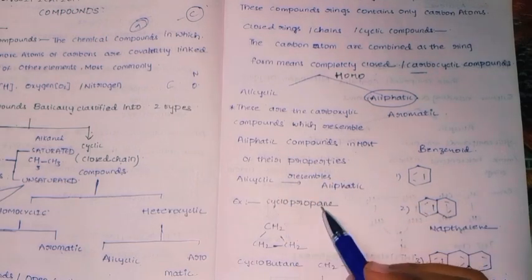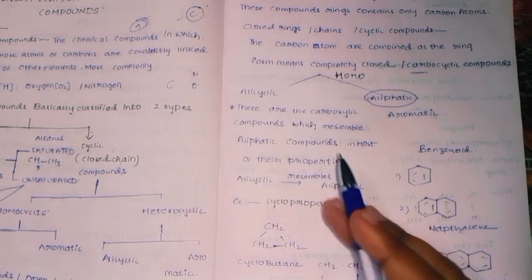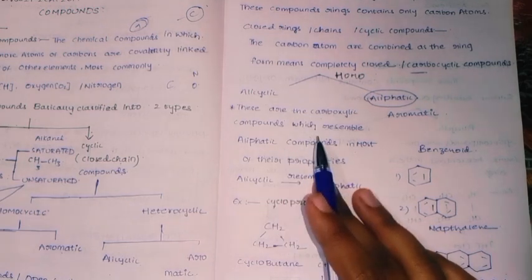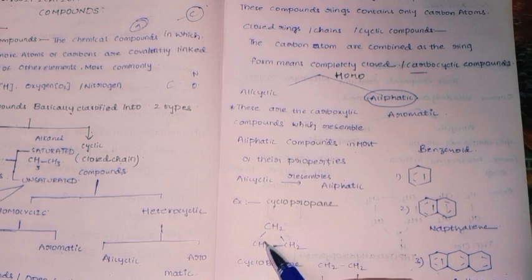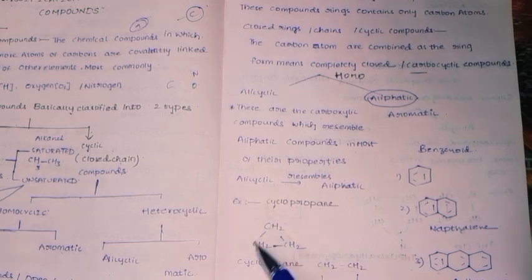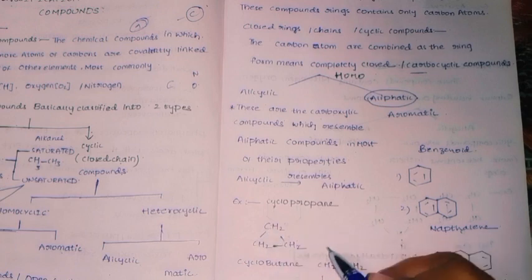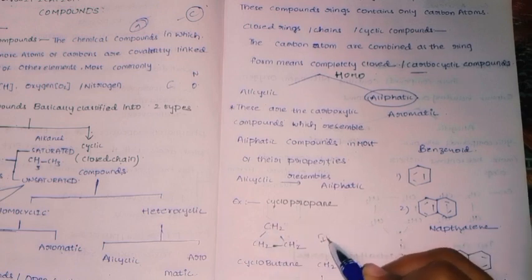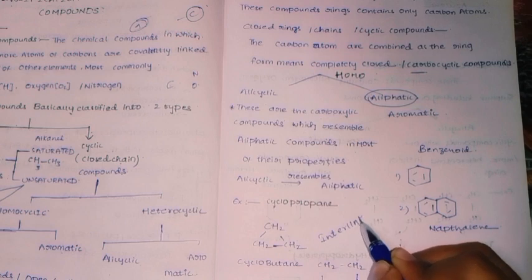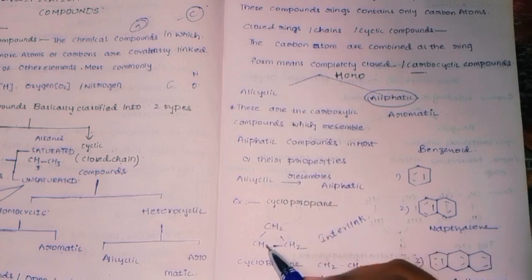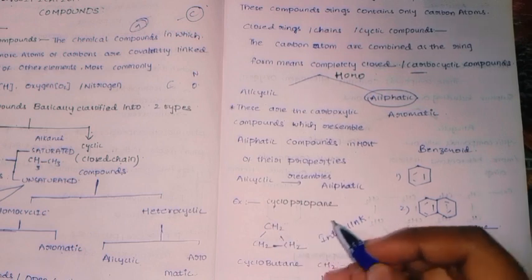For example, cyclopropane — alicyclic means a closed ring. This is three carbons, but these three carbons are interlinked with each other. The structure is CH2-CH2-CH2 forming a triangle, which can be written as a three-membered ring: 1, 2, 3.